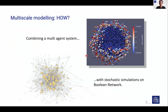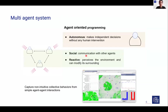How did we plan to develop multi-scale modeling? The idea is to combine multi-agent systems to capture physical properties of the cells with stochastic simulation on Boolean networks to represent the interplay between genes and proteins. In agent-oriented programming, each agent is a computational object that is autonomous — making independent decisions without human intervention — social, communicating and exchanging information with other agents, and reactive, perceiving and modifying its environment. The goal of this technique is to capture non-intuitive collective behavior from simple agent-agent interactions.